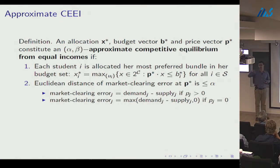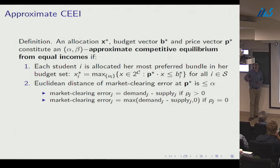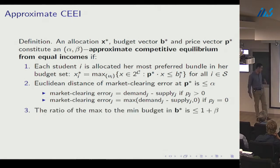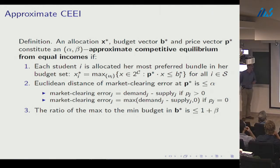For example, if a course has 65 seats and a strictly positive price but is allocated to 63 or 67 students, the market clearing error is 2. We require the Euclidean distance of this error to be at most alpha. Third, the ratio of maximum to minimum budget is at most 1 + beta — so normalizing the minimum budget to 1, the maximum is 1 + beta. An exact competitive equilibrium from equal incomes has alpha equals beta equals zero.